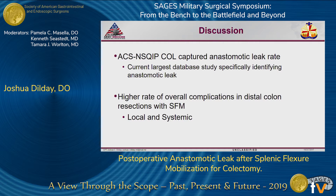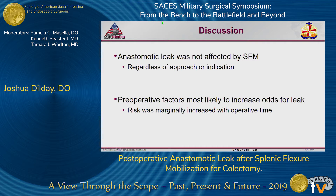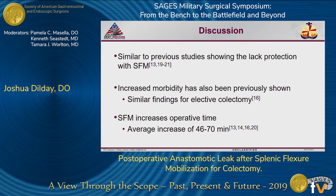In summary, the ACS NISQIP colorectal-specific targeted database allowed us to utilize a specific identification of anastomotic leak, making this the largest current database identifying such complications in distal colon resections. We showed a higher rate of overall complications when splenic flexor mobilization was performed, including both local and systemic complications. However, there was no difference in anastomotic leak rate when this mobilization was performed, regardless of approach or indication. Preoperative factors — not operative factors — were protective, and risk of leak was marginally increased with operative time. These results are consistent with prior literature showing a lack of protection with splenic flexor mobilization, though those studies used smaller, single-institution datasets.